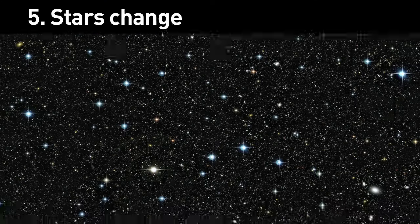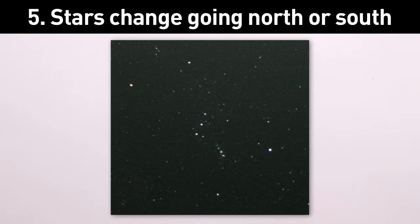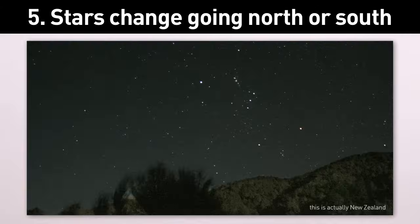5. The stars at night change as you go north or south. For example, Orion is upside down if you're in Australia.